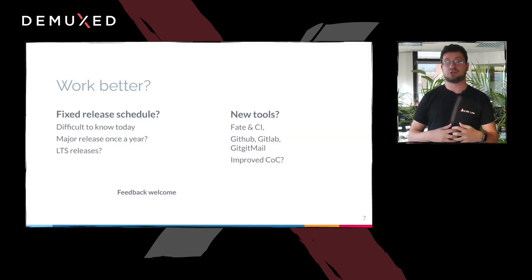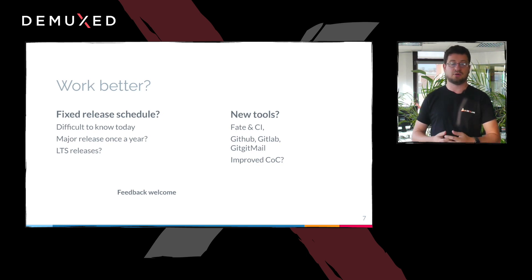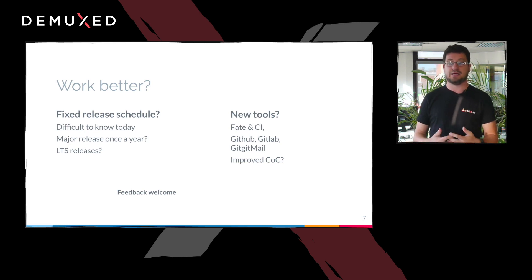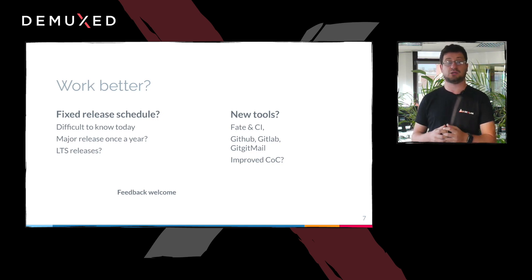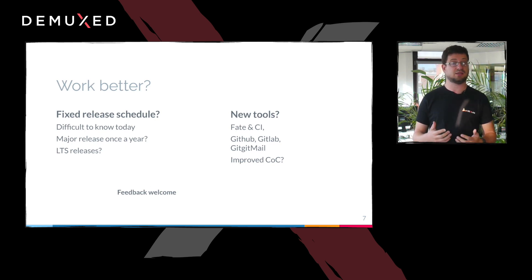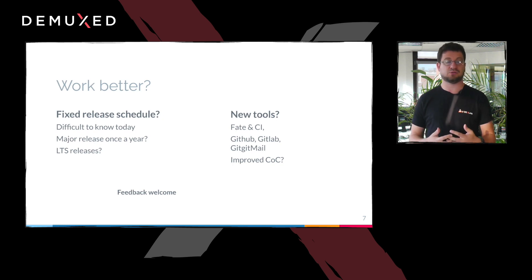We also need to change the development model. These are ongoing discussions. Maybe a fixed release schedule would help — I know that Linux distributions would like that. Also, people with hardware care about having LTS releases. One idea is to have one major release every year and a few smaller releases during the year. We're also discussing how to improve the tooling, continuous integration, and the patch system. People have also discussed moving to GitHub or GitLab, or using something like git-git-mail. So far there is absolutely no consensus on that, but if you have a strong opinion, please share it.